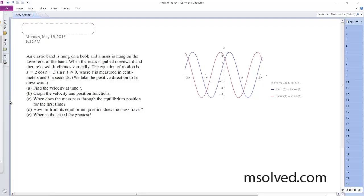We have an elastic band that's hung from a hook and has a mass hung at the lower end of the band. The mass is pulled downward and follows the equation of motion: s equals 2 cosine t plus 3 sine t, where t is greater than 0. S is measured in centimeters and t in seconds.